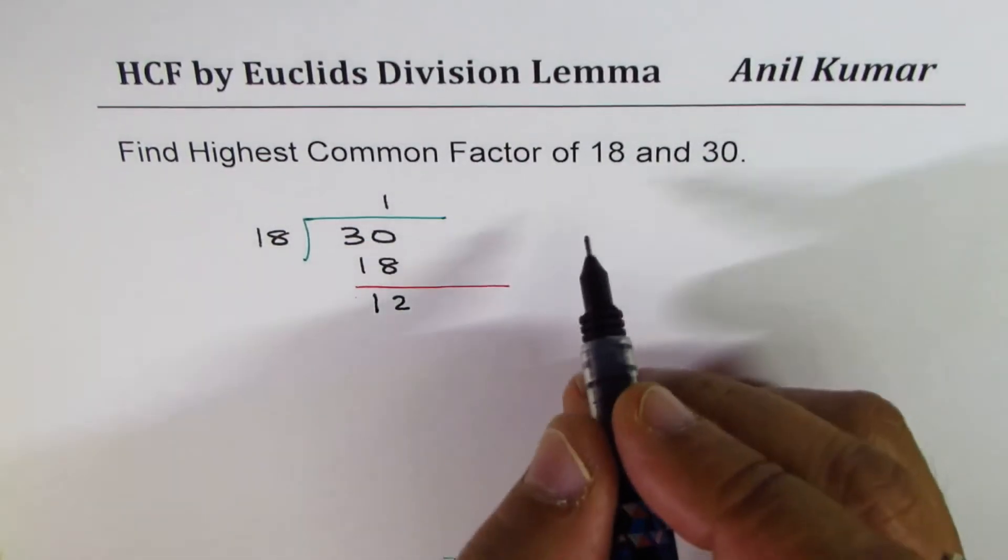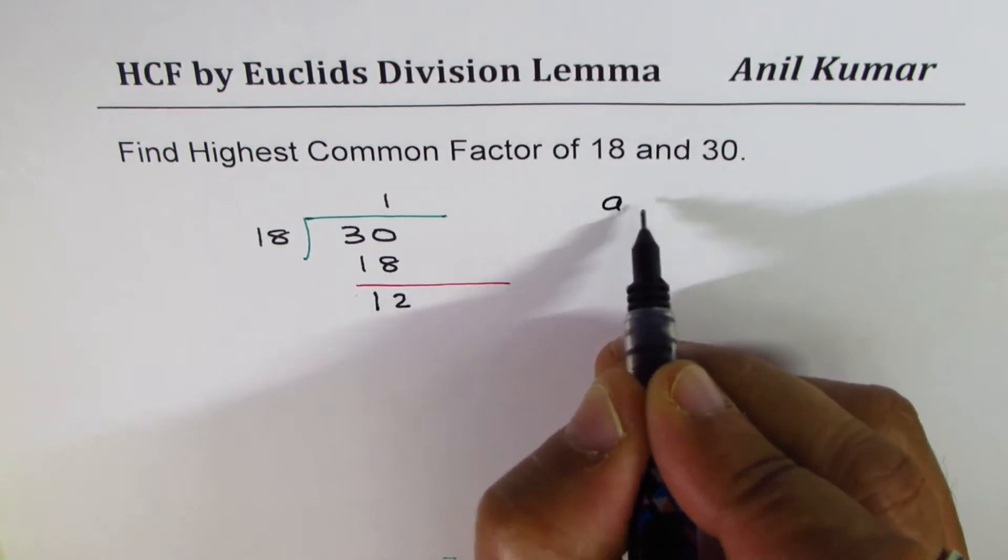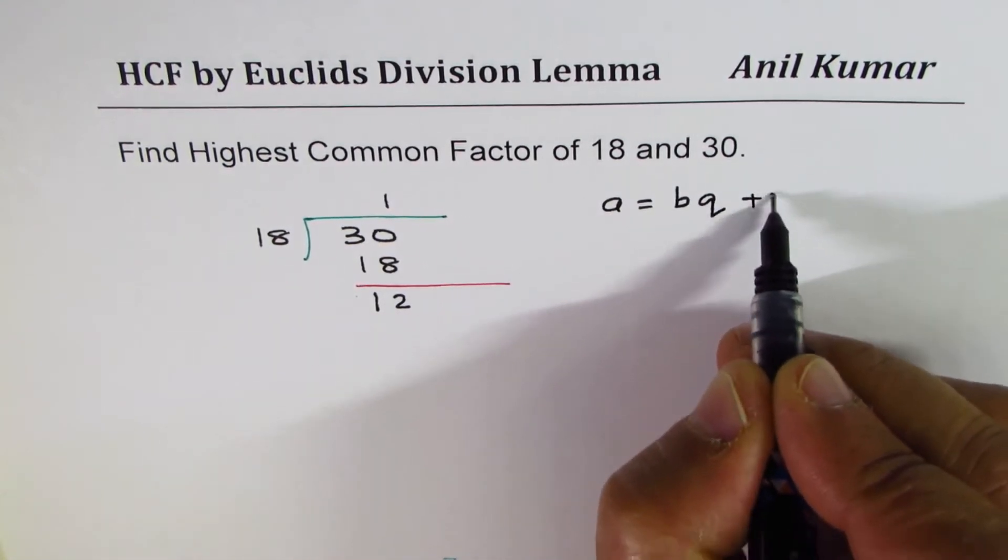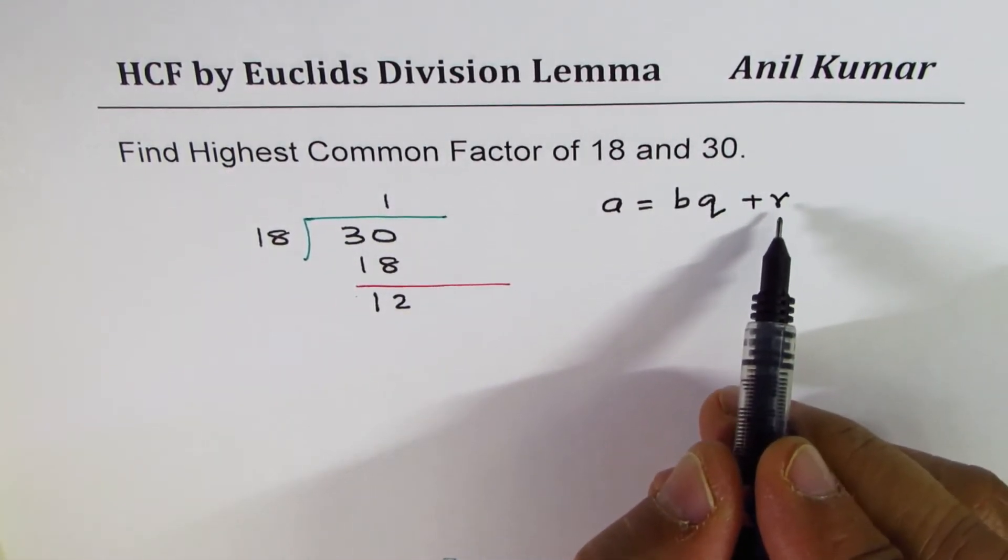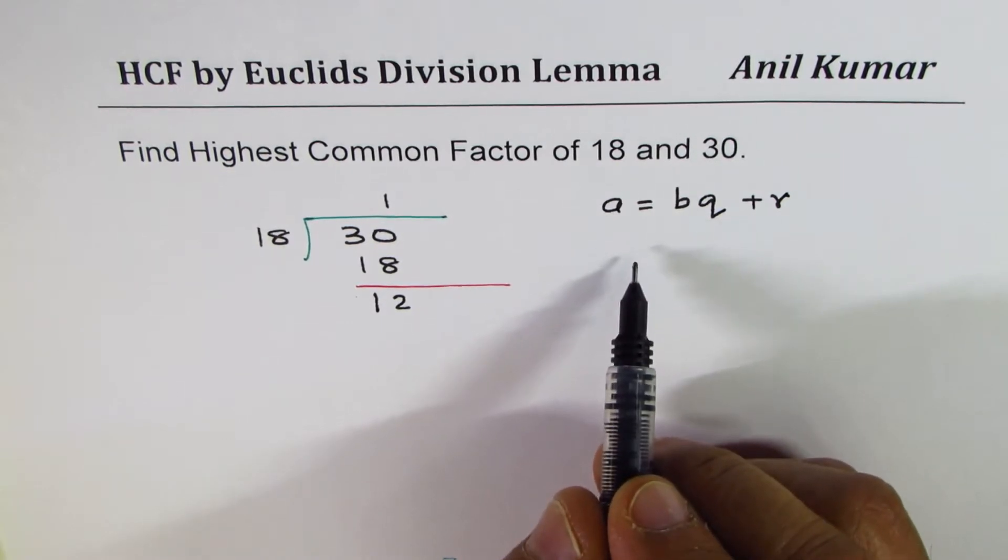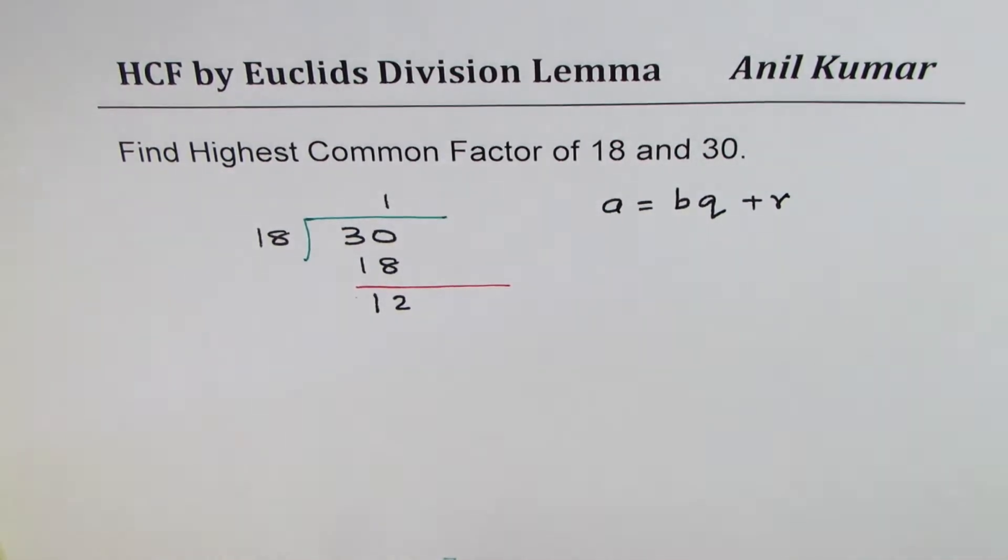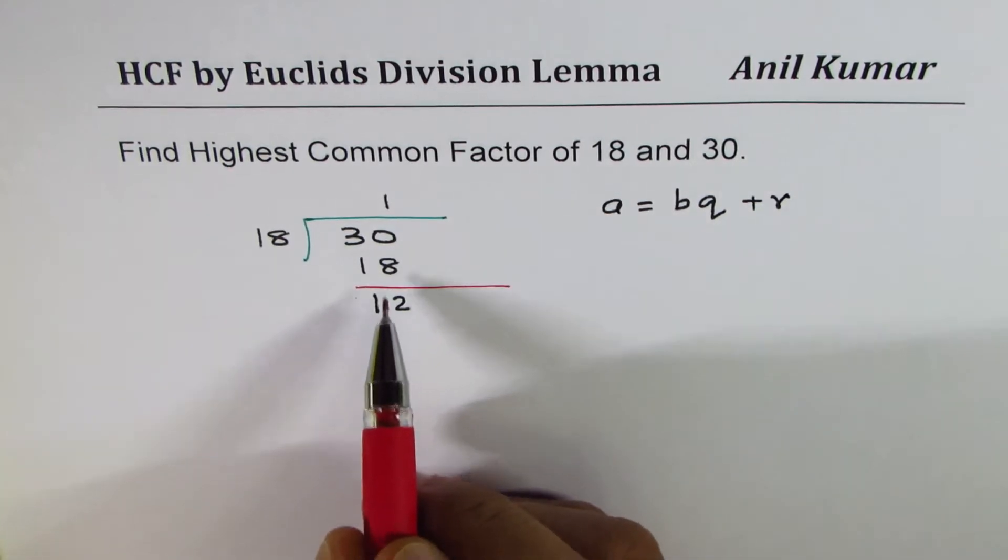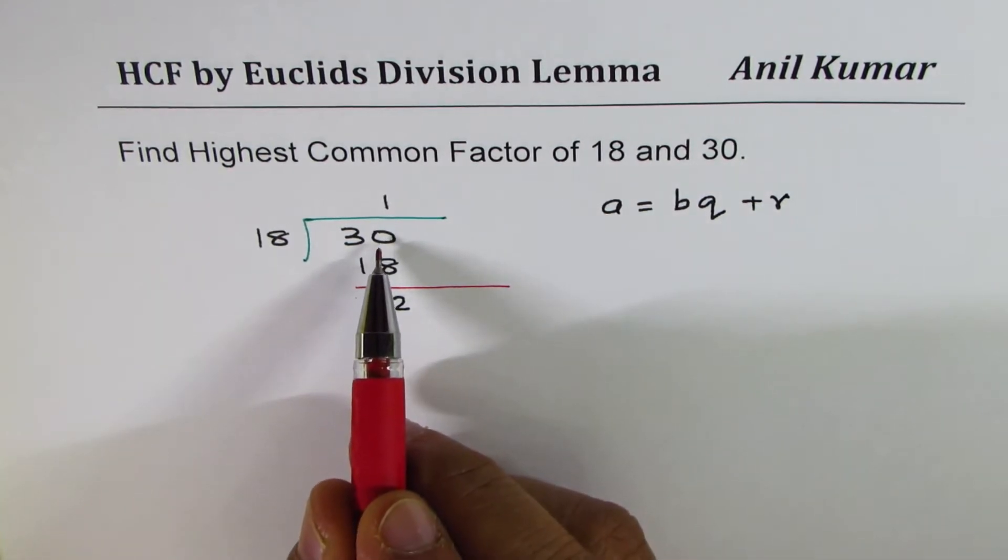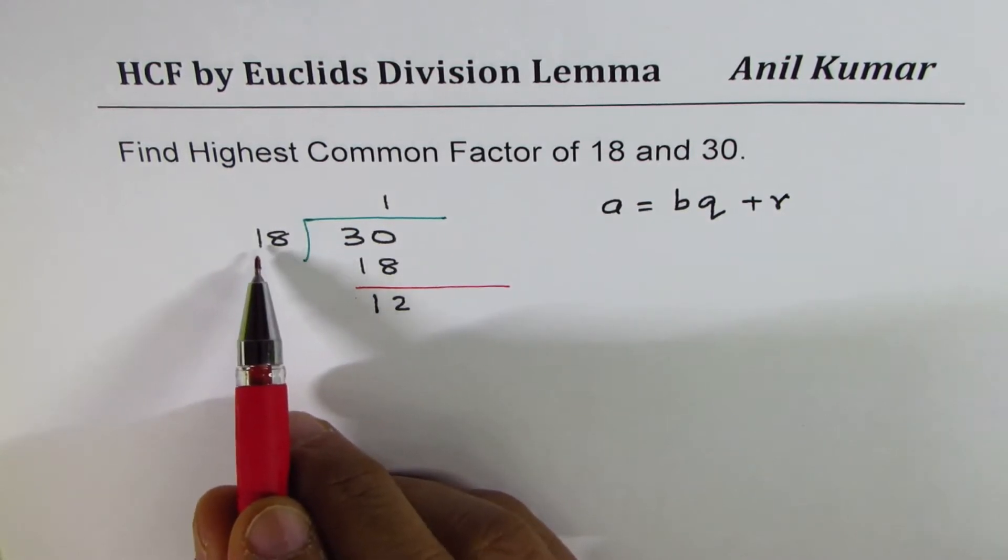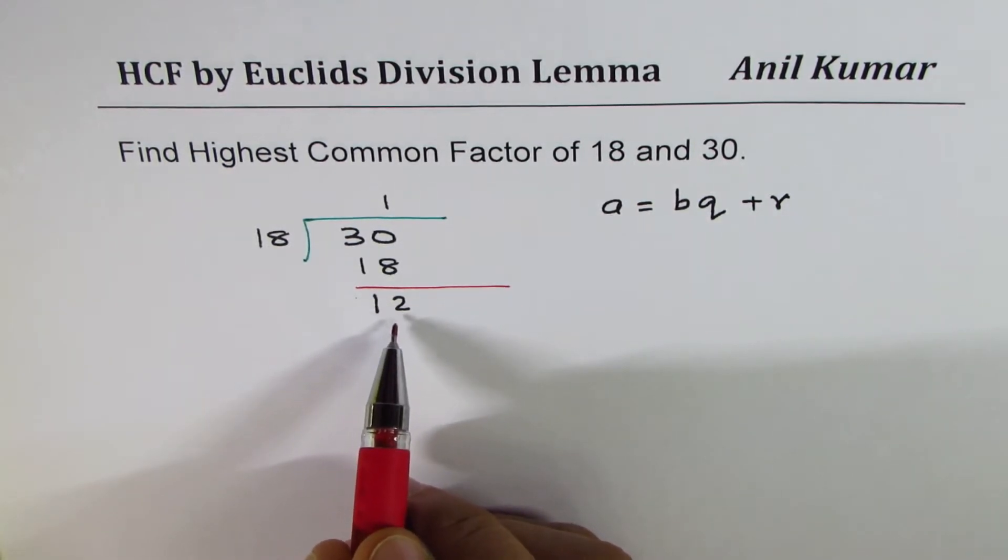In Euclid's method, every number A could be written as B times quotient plus the remainder. If remainder is zero, then only B becomes the factor of A. Now in this case, 18 is not a factor of 30. So what we do is divide the divisor, which is 18, by the remainder, which is 12.